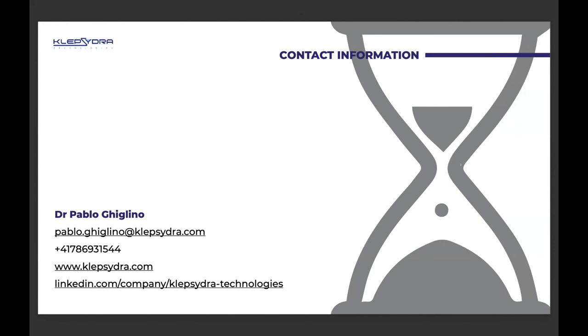Thanks Pablo. One question: you said there will be no drops, you don't lose data. But if your queue is full, do you block the publisher? There is a limit — we saw no drops within the reference system, but obviously there is a physical limit. There is a point where we start dropping — we just notify the user that the ring buffer is out of capacity.